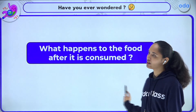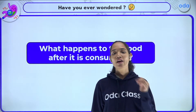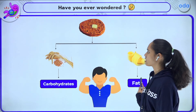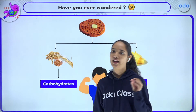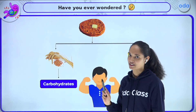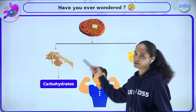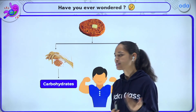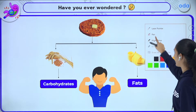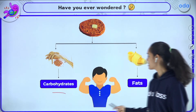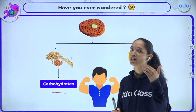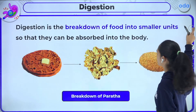Now I have a question for all of you — have you ever wondered what happens to the food after it is consumed? For example, let's talk about a paratha. This paratha is basically made up of wheat, which is a source of carbohydrate. And butter is a source of fat. Your body needs these carbohydrates and fat as nutrients, and the digestive system is what helps deliver them to the body.